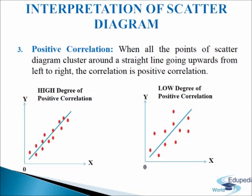Next, positive correlation: if the coefficient of correlation is neither 0 nor exactly 1 — meaning it is between 0 and 1 — it may be classified as positive correlation. If plotted points slope upwards from left to right (positive slope) and all the points cluster near the regression line, it refers to a high degree of positive correlation, where r is between 0.75 and +1. If the plotted points slope upwards but are very much scattered around the regression line, it refers to a low degree of positive correlation, where r is between 0 and +0.25.